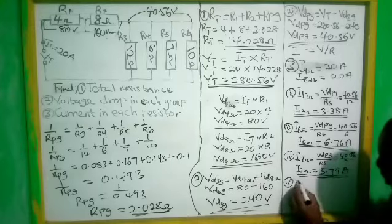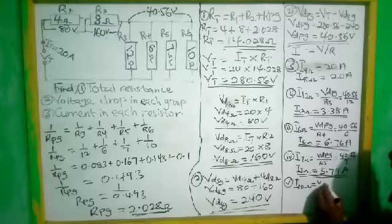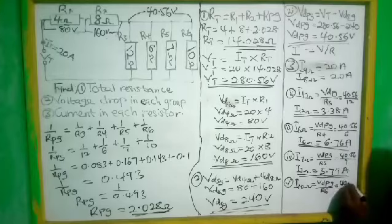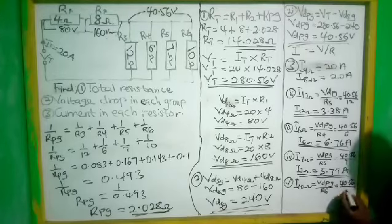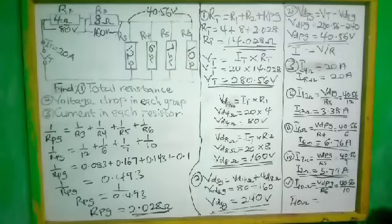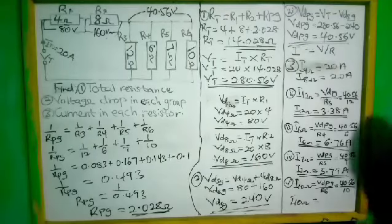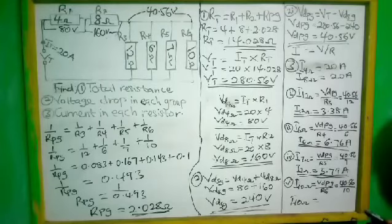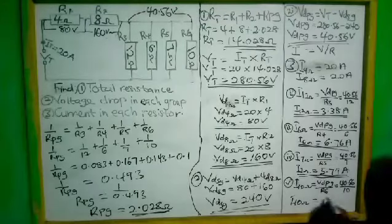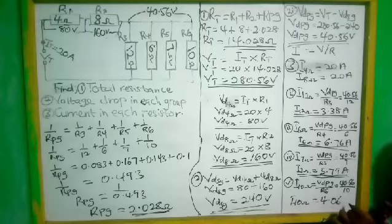Current in R6 (10 ohms) equals the voltage drop in the parallel group divided by R6. So 40.56 divided by 10. Our current in the 10-ohm resistor equals 4.06 amps.